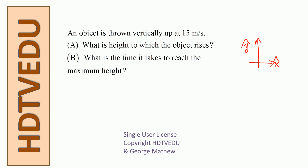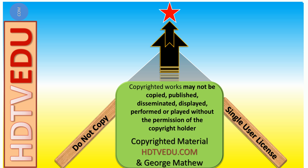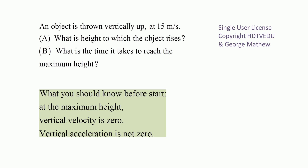An object is thrown vertically up at 15 meters per second. What is the height to which the object rises? What is the time it takes to reach the maximum height? Positive x is defined as to the right, and positive y is defined as vertically up.